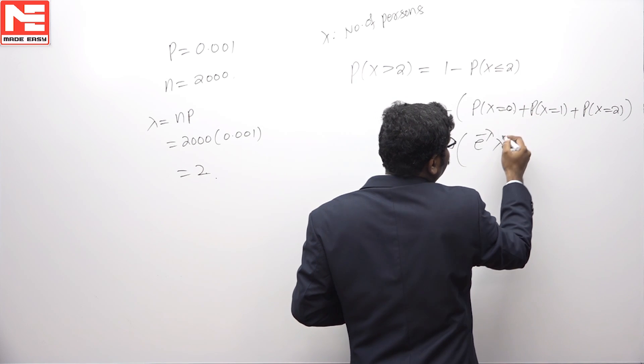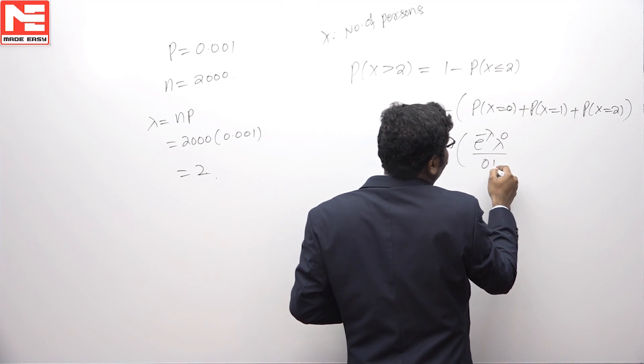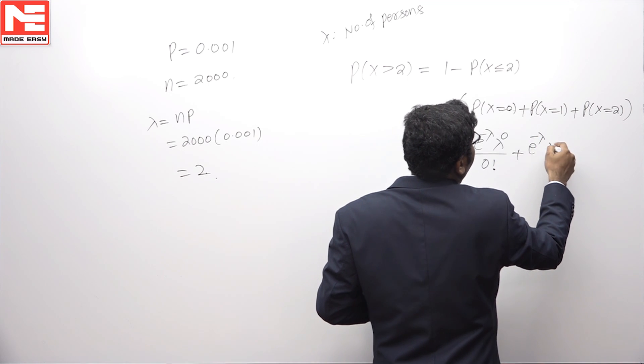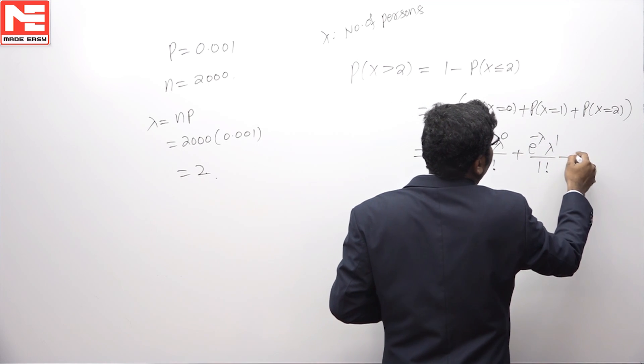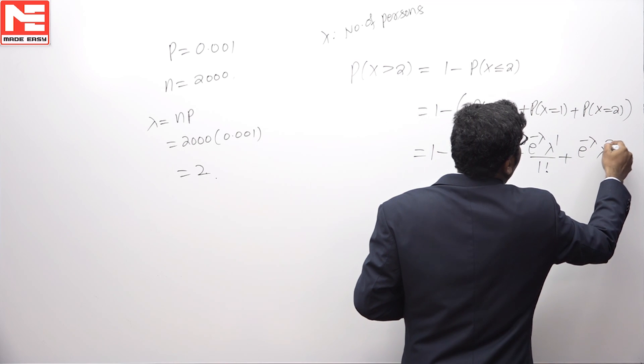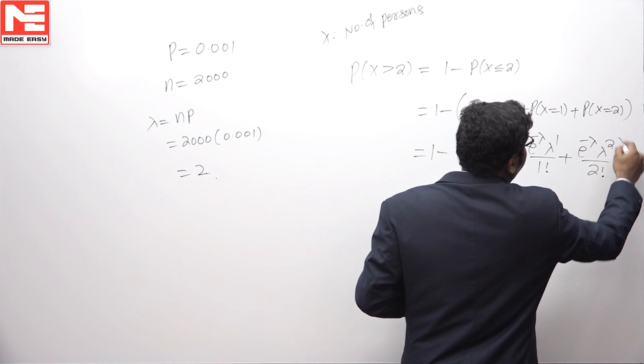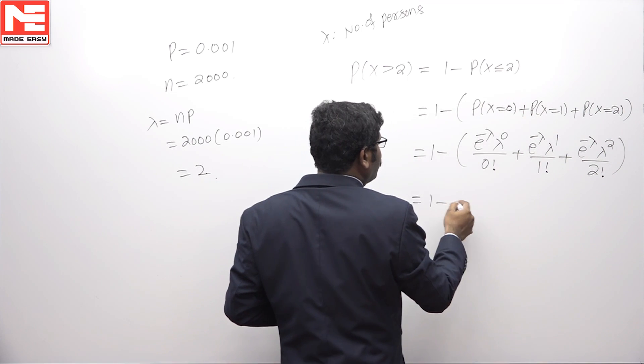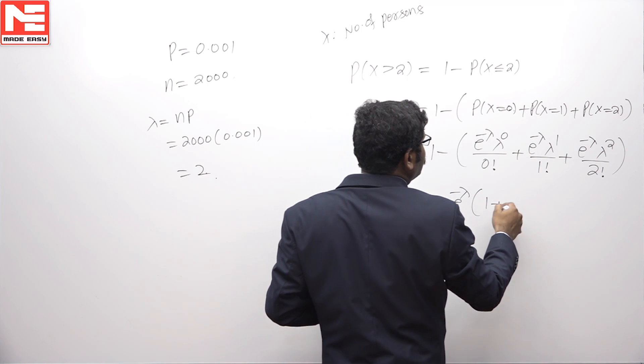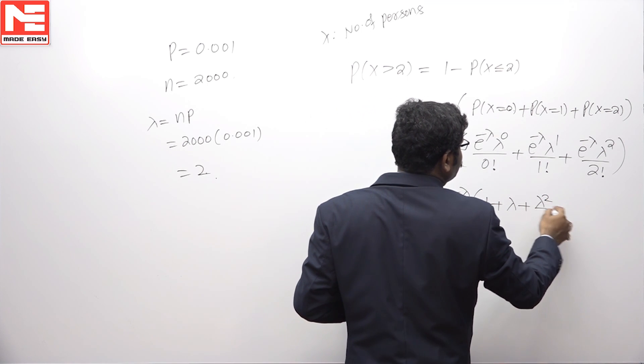For X equals 0, lambda to the power 0 by 0 factorial. E to the power minus lambda times lambda to the power 1 by 1 factorial. E to the power minus lambda times lambda squared by 2 factorial. Taking e to the power minus lambda as common, we get 1 plus lambda plus lambda squared by 2.